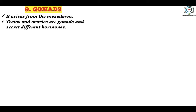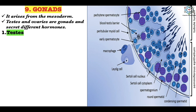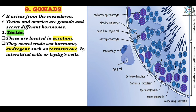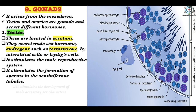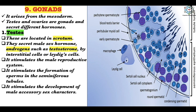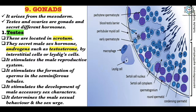The ninth endocrine gland is the gonads. They arise from the mesoderm. The testes and ovaries are the gonads and secrete different hormones. The testes are located in the scrotum and secrete male sex hormones — androgens such as testosterone — by the interstitial cells (Leydig cells). Testosterone stimulates the male reproductive system, stimulates formation of sperms in the seminiferous tubules, stimulates development of male accessory sex characters, and determines male sexual behavior and the sexual urge.